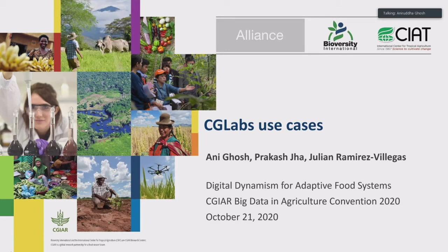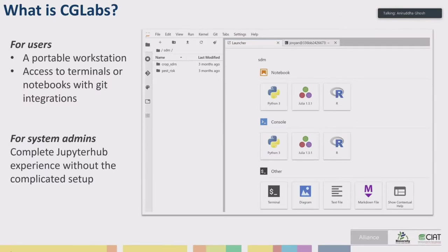What CG Labs looks like — you're probably familiar with this interface from Maeda's presentation. For a user like me, I see it as a portable workstation. I log into the browser and see this interface — it's the same whether I'm in my office or traveling, as long as I have internet connection. It gives me access to terminals, notebooks with GitHub integrations, and nice tools for file transfers. From a system administration point of view, it's a complete JupyterHub experience, but tailored for agriculture-type research — special packages in Python or R, machine learning packages in R. There is terminal support, R notebook and Python notebook support, Julia support, and you can also edit text and markdown files.